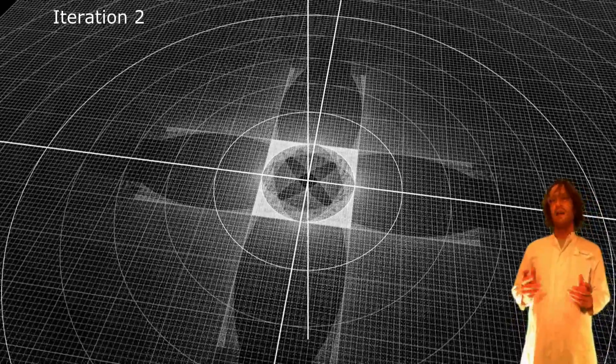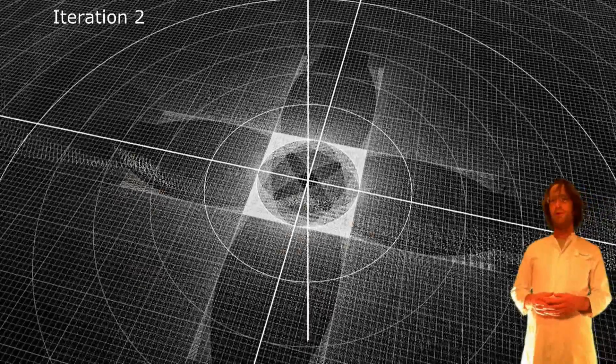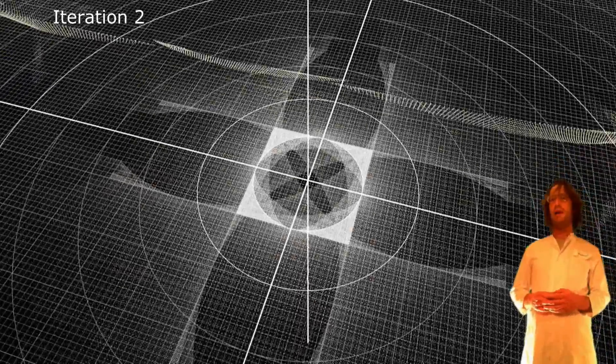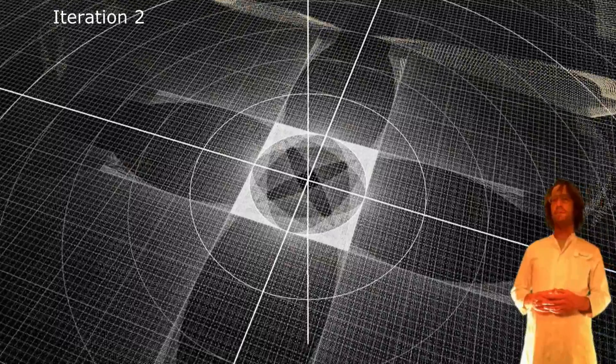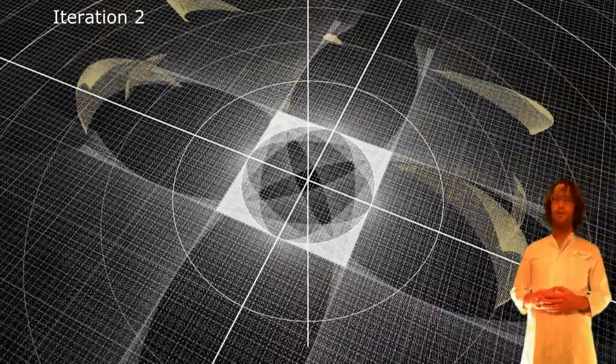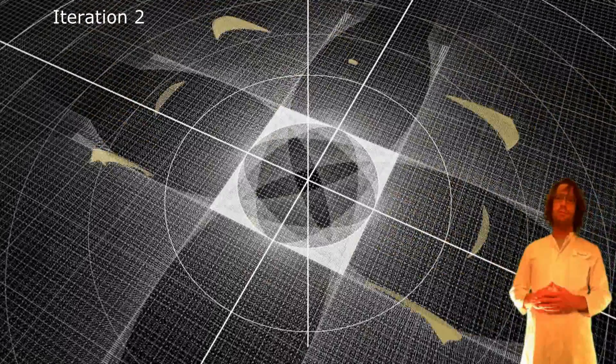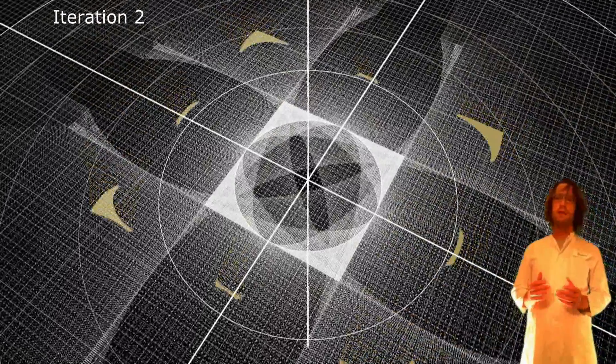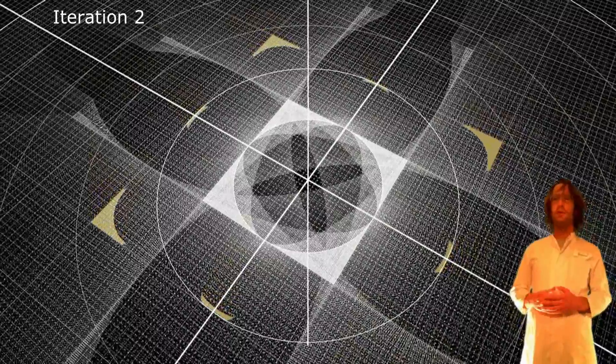For the first time points leave the bailout radius. We mark the points with the current iteration depth color and they start to form the image.